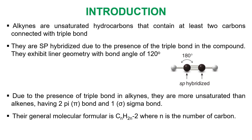This group of compounds are sp hybridized because of the presence of the triple bond, giving them linear geometry with a bond angle of 180 degrees. Due to the presence of this triple bond, alkynes are more unsaturated than alkanes, having two pi bonds and one sigma bond. Their general molecular formula is represented as CnH2n-2, where n is the number of carbons.